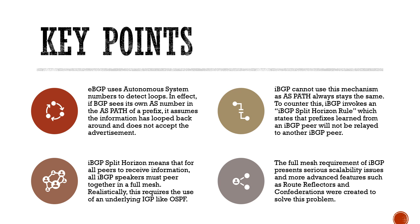What is the implication of this rule? If a BGP speaker cannot relay iBGP-learned routes to another iBGP peer, how are all these routers going to learn the routes? To learn all the routes and ensure a loop-free environment, you've got to effectively mesh all iBGP peers together.